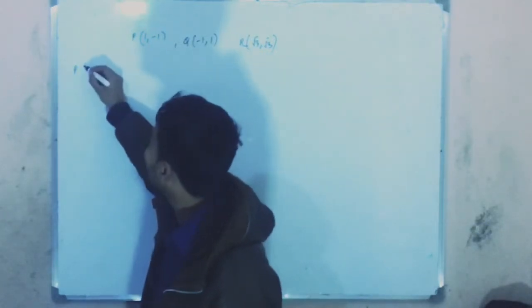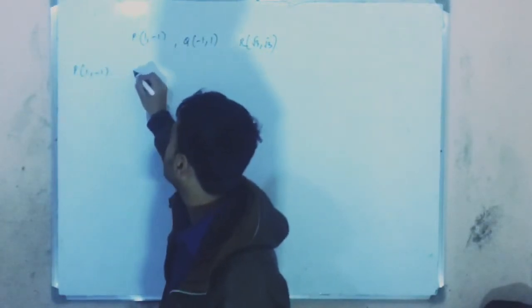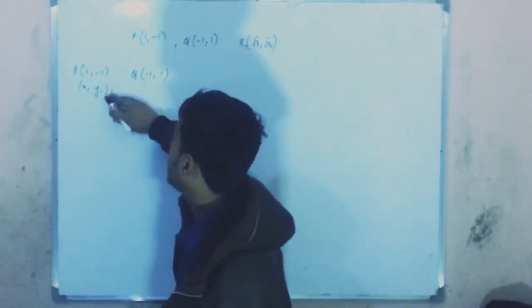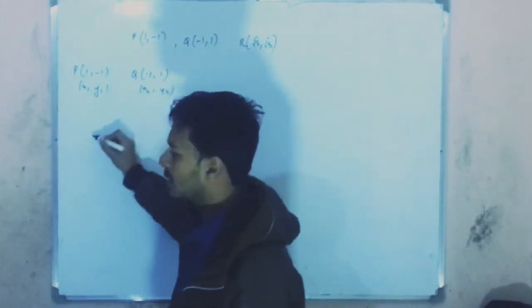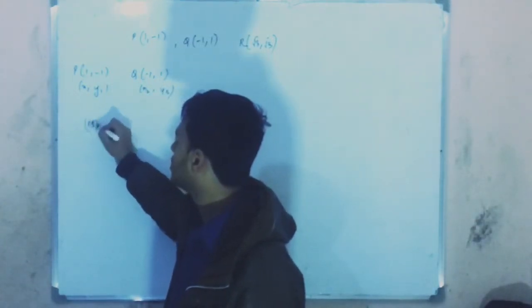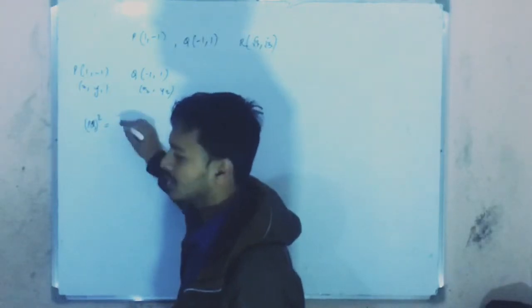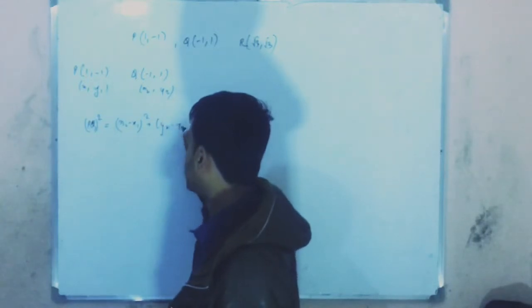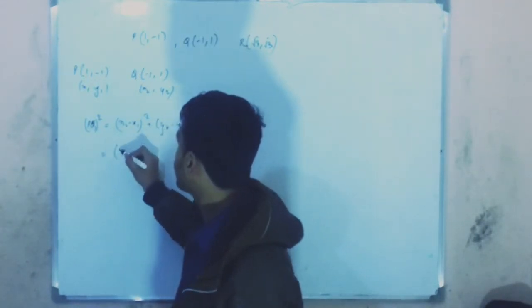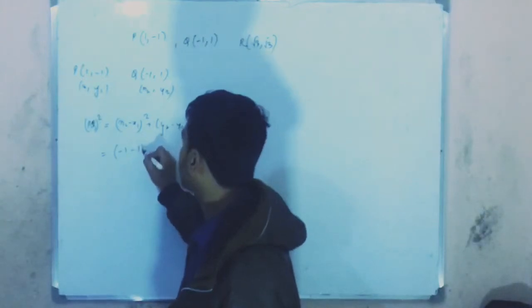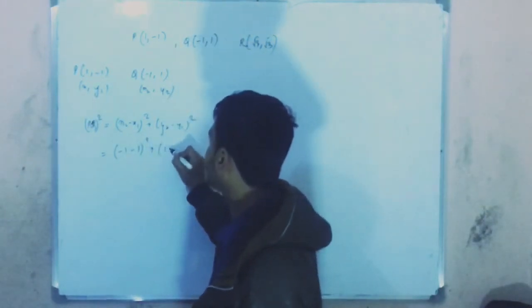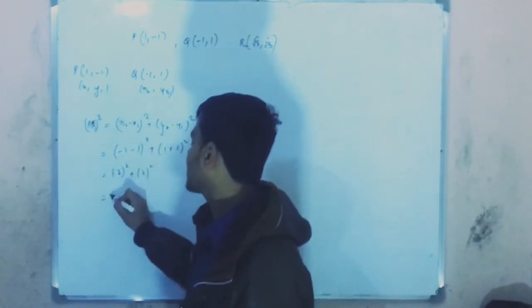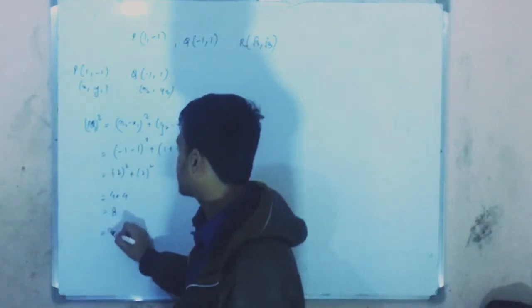First we'll solve for PQ. Using the distance formula, PQ equals square root of x2 minus x1 squared plus y2 minus y1 squared. So this is minus 1 minus 1 squared plus 1 plus 1 squared. This is minus 2 squared plus 2 squared, which is 4 plus 4.